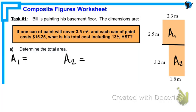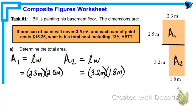Since they're both rectangles we'll use the area of a rectangle formula, length times width. Substituting the length and width of each rectangle into the formula gives us 2.3 meters times 2.5 meters for the first, and 3.2 meters times 1.8 meters for the second.